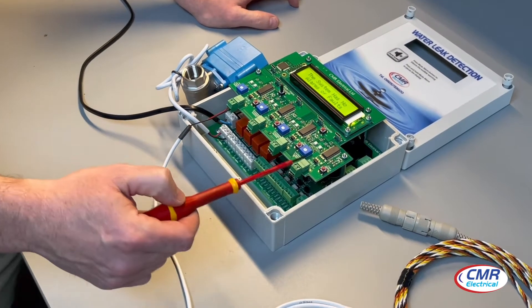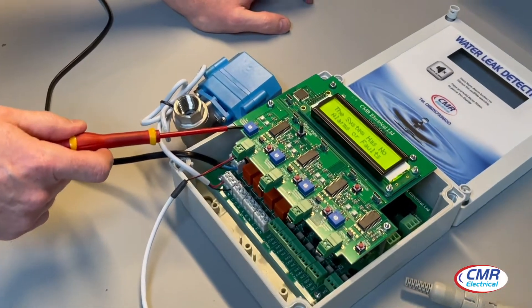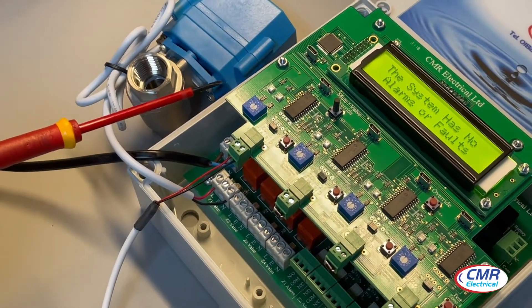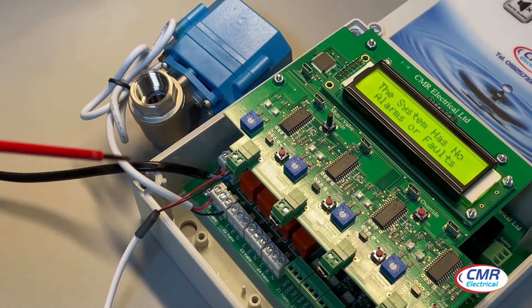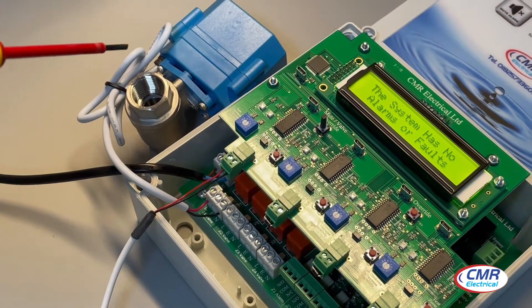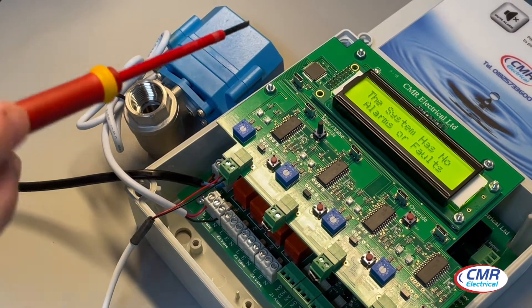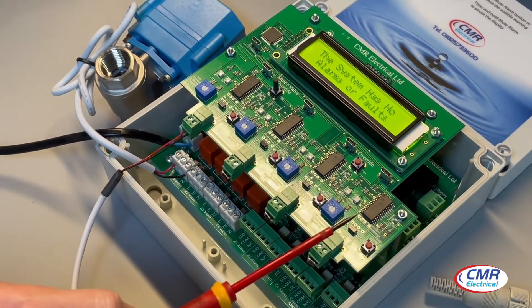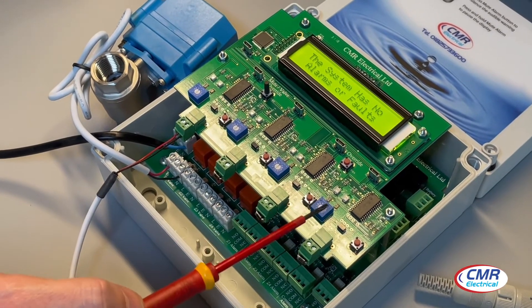Each zone has a blue pot for sensitivity adjustment. You can increase the sensitivity by turning it clockwise or decrease it by turning it anti-clockwise, and it's for every single zone. It will have a potentiometer, or pot, for sensitivity adjustment.